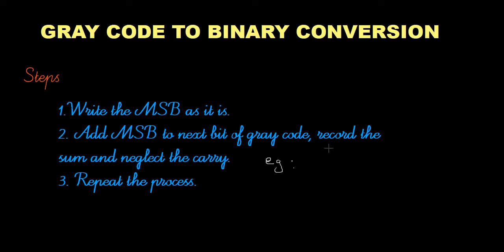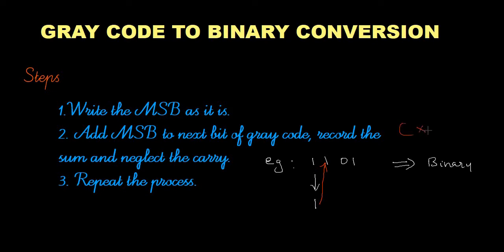I have a gray code that is 1 1 0 1 and I have to convert this gray code to binary. The first step is to write the MSB as it is. The next step is to add the MSB bit to the next bit of the gray code, record the sum and neglect the carry. That means here we are performing the XOR operation — recording the sum and neglecting the carry.